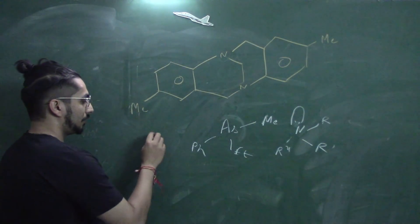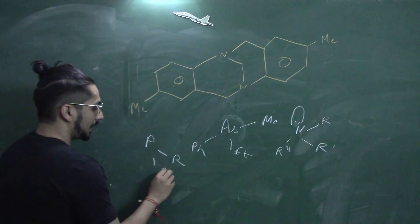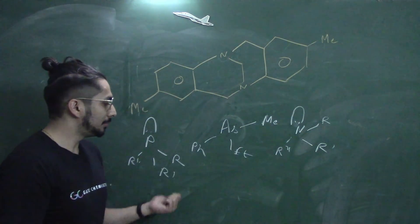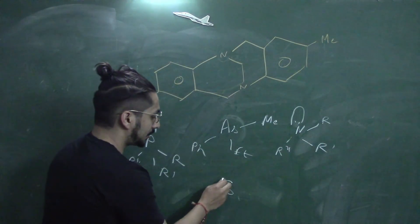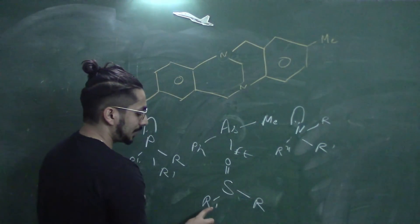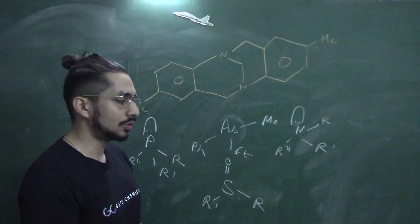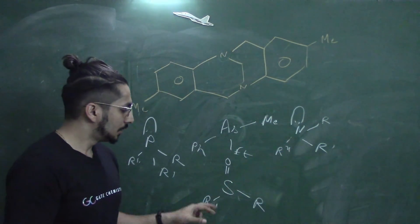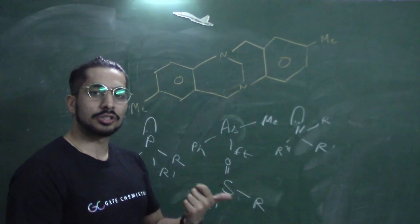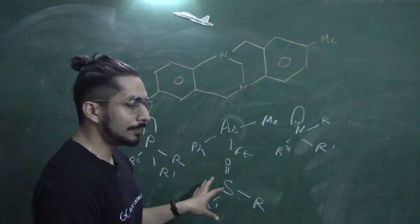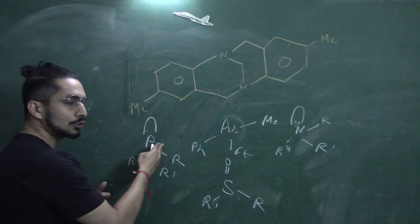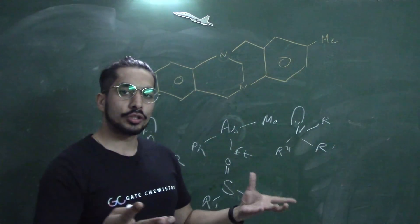For example, take phosphorus attached to three different groups R, R', and R'' with a lone pair — that molecule turns out to be optically active. Similarly, take a sulfur molecule with a double bond to oxygen, an R group, and an R' group: three different groups plus a lone pair on the sulfur. That sulfur is also optically active. Pyramidal inversion occurs but, being a larger atom, it is comparatively slow and we can isolate the enantiomers.